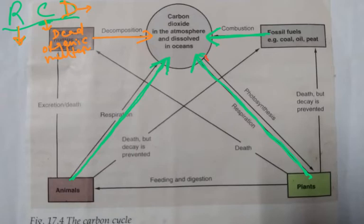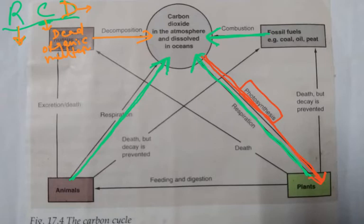There is only one process which removes carbon dioxide from the atmosphere, and that is photosynthesis. Photosynthesis only occurs in plants — animals don't photosynthesize, fossil fuels don't photosynthesize, and dead organic matter doesn't photosynthesize. So there is only one arrow coming out of carbon dioxide in the air, which is photosynthesis. This is a very good way of handling MCQs. Carbon dioxide in the air is used up in photosynthesis and diffuses into the plants because it is being used up, diffusing from higher to lower concentration.